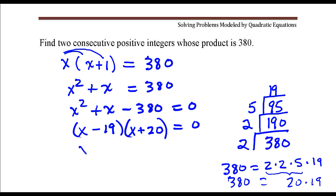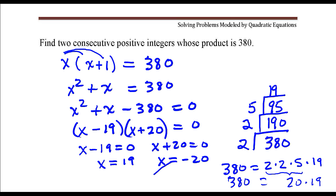Now I'll solve each factor. In this case, x is 19, and here x is negative 20, which I'm going to go ahead and just throw this particular solution out because in the context of the problem,